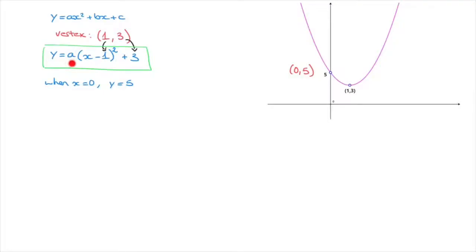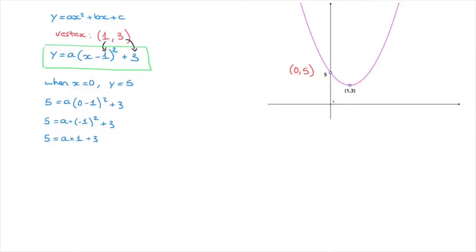The fact that the parabola passes through the point (0, 5) allows us to state that when x equals 0, y must equal 5. So to find the value of a, we replace x by 0 and y by 5: 5 equals a times (0 minus 1) squared plus 3. That's 5 equals a times (negative 1) squared plus 3. Since (negative 1) squared equals 1, that gives 5 equals a times 1 plus 3, so 5 equals a plus 3. Subtracting 3 from each side gives a equals 2.